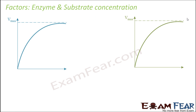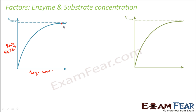Now let us look at enzyme concentration and substrate concentration. With enzyme concentration on the x-axis and the rate of reaction on the y-axis, it is observed that as enzyme concentration increases, the rate of reaction also increases initially. But after a certain point, even though enzyme concentration is still increasing, the rate of reaction is not increasing anymore.